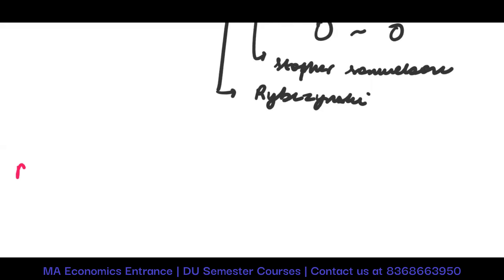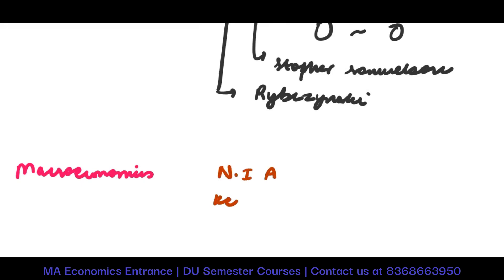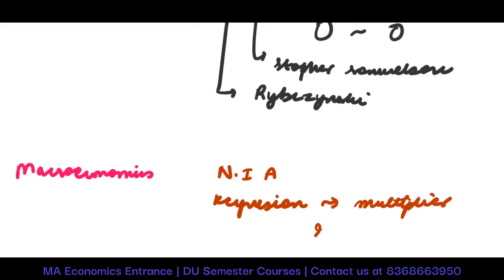Let's go to macroeconomics. In macroeconomics, you should be doing national income accounting and the simple Keynesian model. Definitely, there will be a question which will use the multiplier effect and will give you an implicit model.